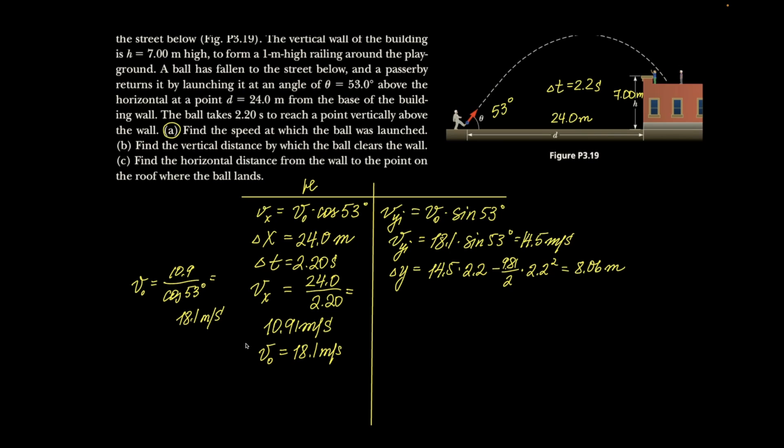So then, if I subtract 7 meters from that, I get 1.06 meters above the wall. Now, where it lands is 1 meter less than the wall, because they say there is a railing around the playground. So the playground is 1 meter lower at 6 meters.